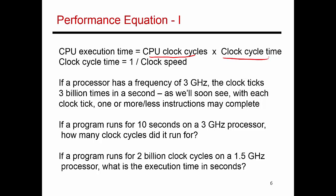So I have a few examples over here. Let's say that a processor has a frequency of 3 gigahertz. That means the clock ticks 3 billion times in a second. And let's assume a CPI of 1. That means in every single clock tick, one instruction finishes. So if a program runs for 10 seconds on the 3 gigahertz processor, how many cycles does it run for?